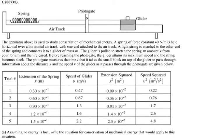This is AP Physics C, I believe, 2007 M3. The apparatus above is used to study conservation of mechanical energy. A spring of force constant 40 N/m is held horizontal over a horizontal air track with one end attached to the air track. A light string is attached to the other end of the spring and connects to the glider of mass M.